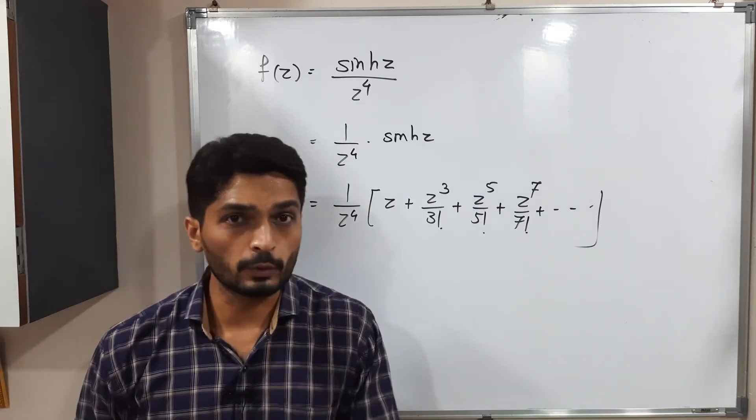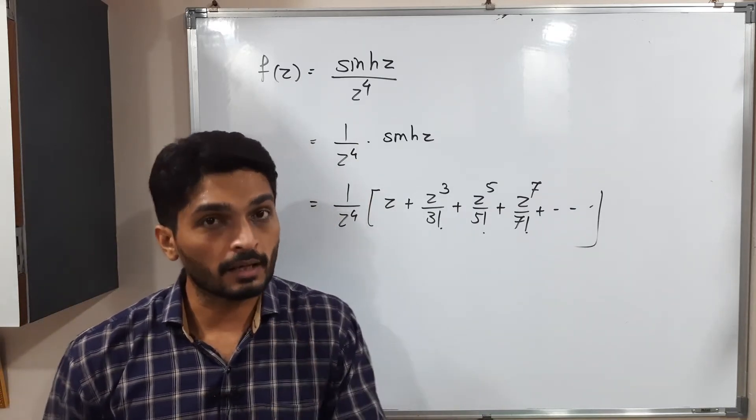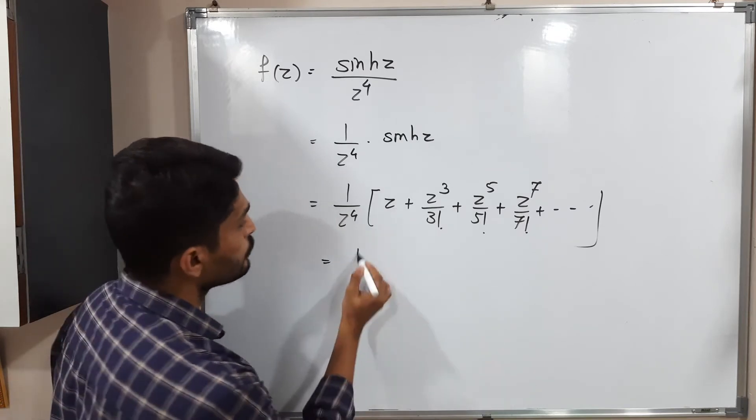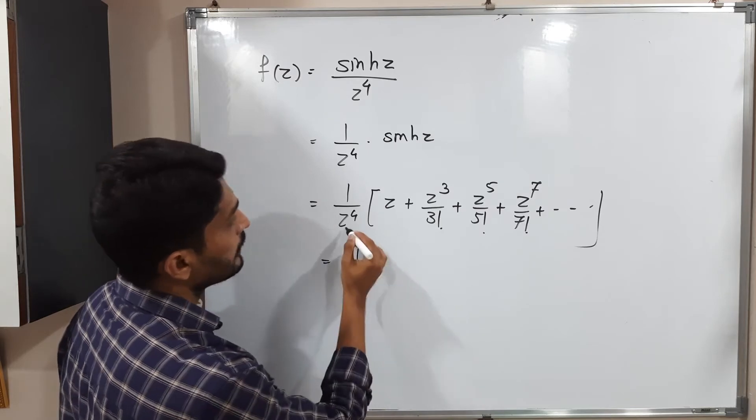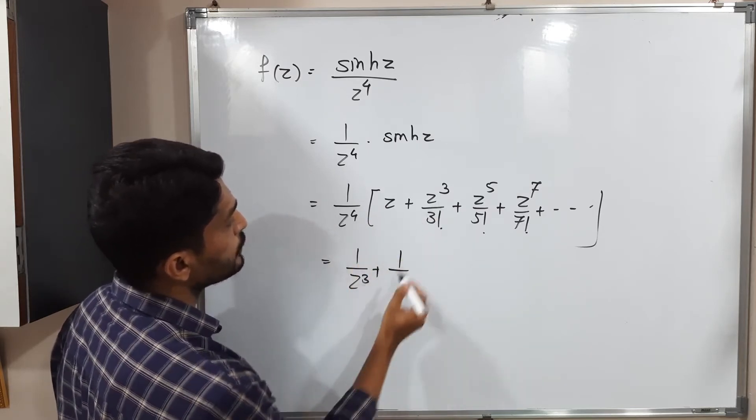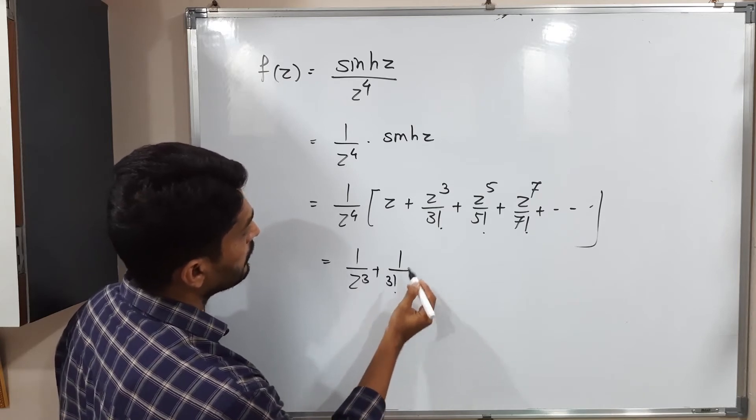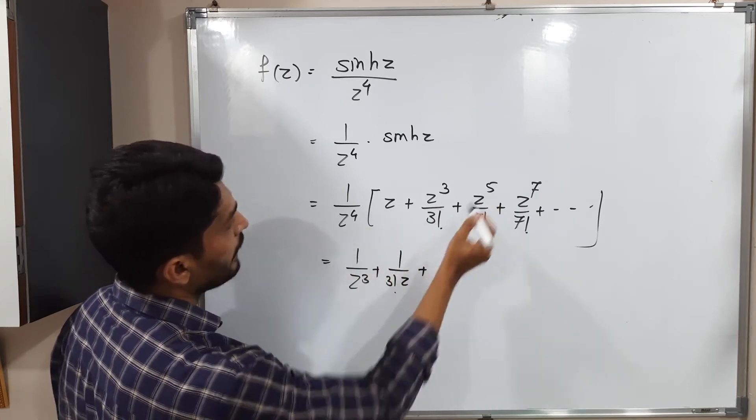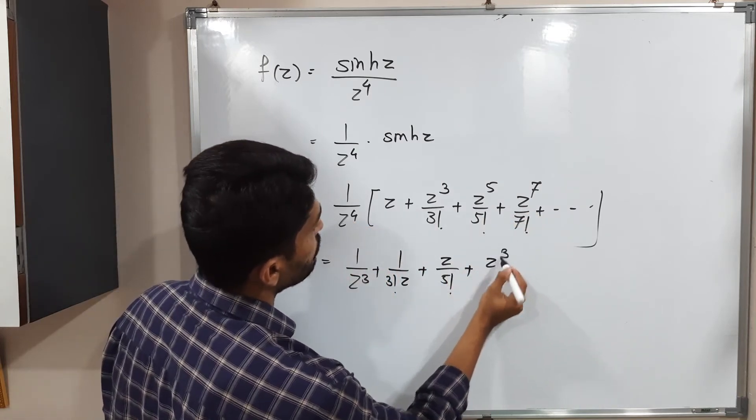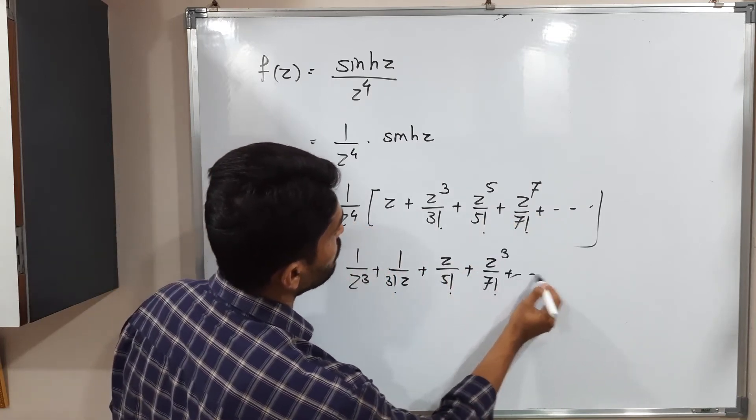After that, what will we do? We will multiply each term by this one upon z raised to four. So what will happen? z will get canceled, so one upon z³ we have. Now, if you multiply the second term by one upon z raised to four, z³ cancel: one upon 3! z. For this z⁵ term, we get z upon 5!. If you multiply this term by this one, we get z³ upon 7! and so on.